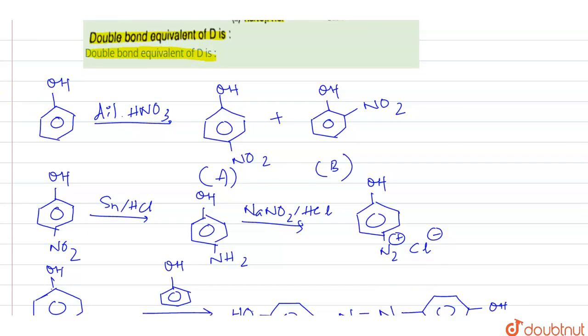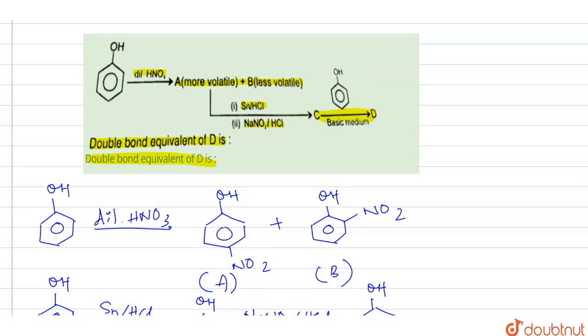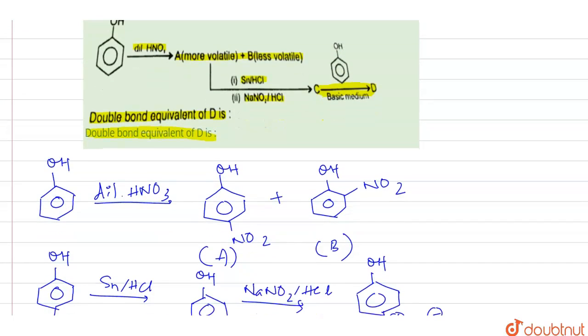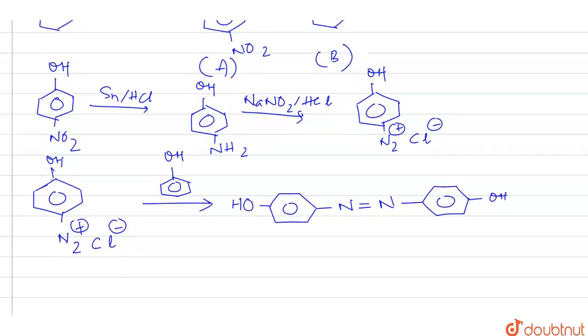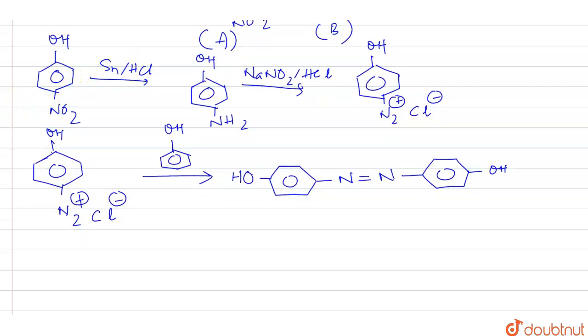So let's mark first. This is A and this is B. After that, when A is reacting with Sn/HCl and NaNO2/HCl, it will produce C. So this will be C, and this will be D.